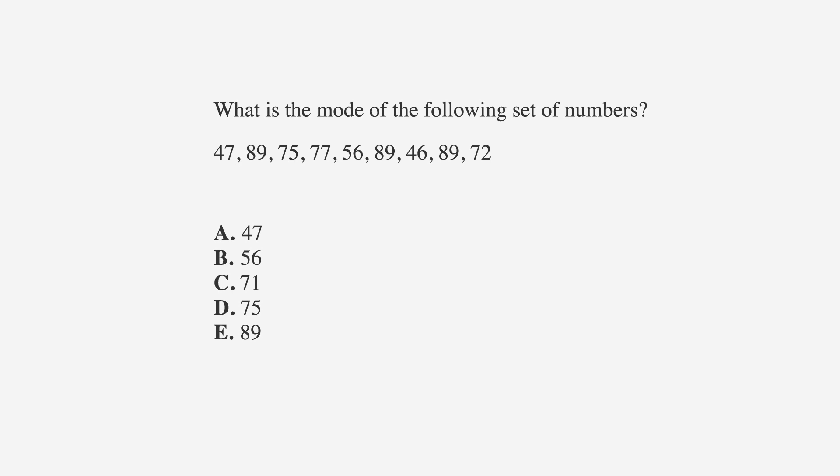What is the mode of the following set of numbers? 47, 89, 75, 77, 56, 89, 46, 89, and 72. A is 47, B is 56, C is 71, D is 75, and E is 89.